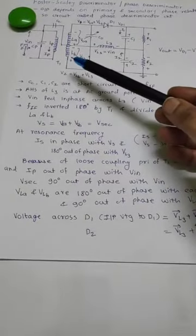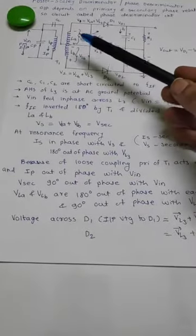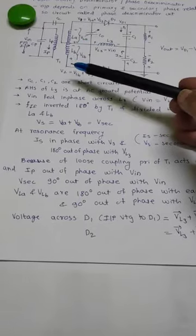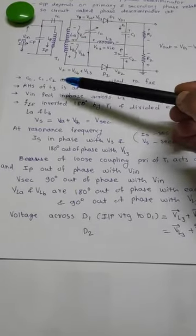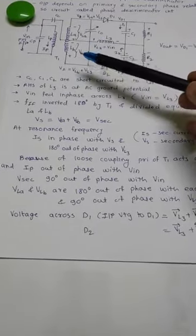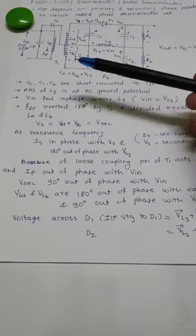The secondary voltage induced get equally divided across LA and LB. So, secondary voltage is defined as VLA plus VLB.